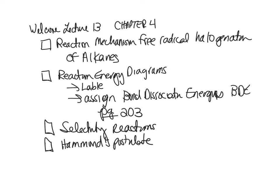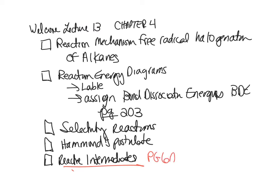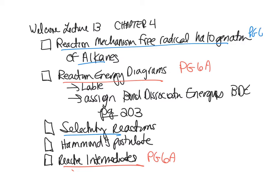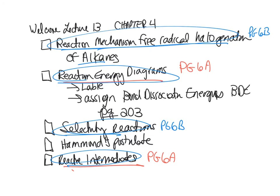You have two Pogel exercises on this. We'll talk about reactive intermediates in Pogel 6A, and you'll also see reaction energy diagrams described in Pogel 6A. Your reaction mechanism for free radical halogenation and selectivity is in Pogel 6B. I will introduce these concepts here and then we'll go and learn more by working through our Pogel activities.